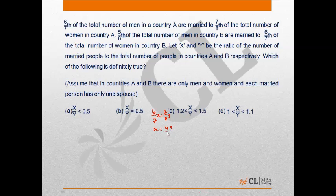x is equal to 49 upon 48y where total number of men and women, that is the total population of country A, is x plus y is equal to 49 upon 48y plus y. It comes out to be 97 upon 48y.